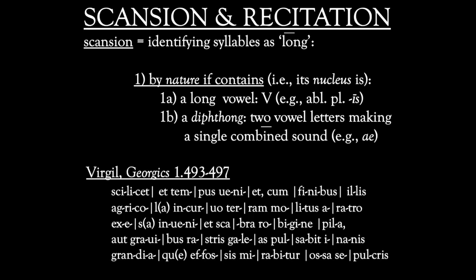Let's look at each of these reasons for syllabic length in our passage from Virgil. On this slide, every syllable that is long by nature is marked in red — that is, every long vowel. As it happens, this passage includes no diphthongs. We've marked every such syllable with a macron. How to know if a vowel is long by nature? Partly memorization — for example of case endings and other predictable forms — and partly by reading, scanning, and reciting a lot of poetry. That way, the quantities will become more naturally fixed in place.